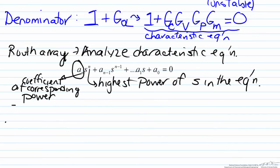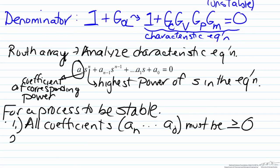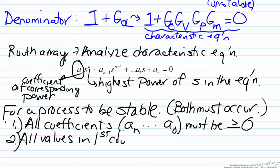So for a process to be stable, the first criteria is that all coefficients, in other words everything from a_0 to a_n, must be greater than or equal to zero. The second criterion, both must occur for this to happen, one of these is not enough, is that all the values in the first column of the Routh array must be positive.